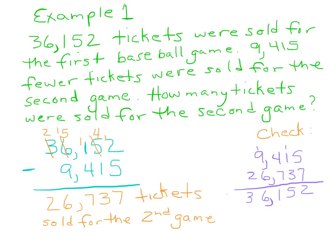In example one, 36,152 tickets were sold for the first baseball game. 9,415 fewer tickets were sold for the second game. How many were sold for the second game? A key here is they're asking how many fewer, and that means you're going to subtract. So we take our 36,152 and put that at the top. Then we write 9,415 lined up by place value below it. We do our subtraction with borrowing, and we get 26,737 tickets sold for the game.